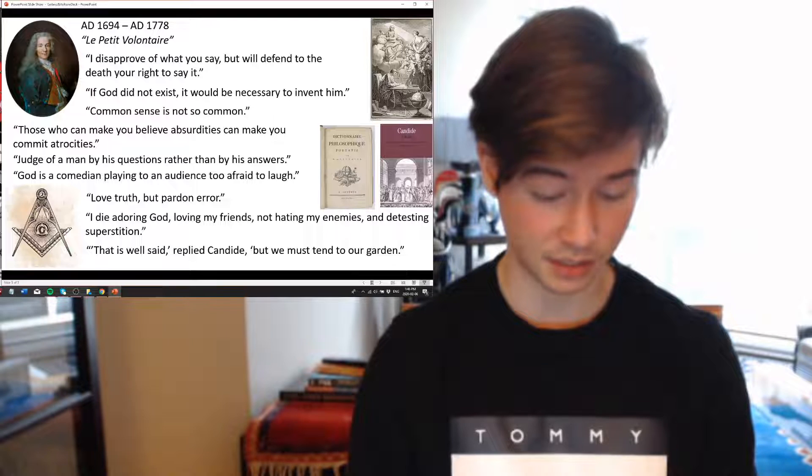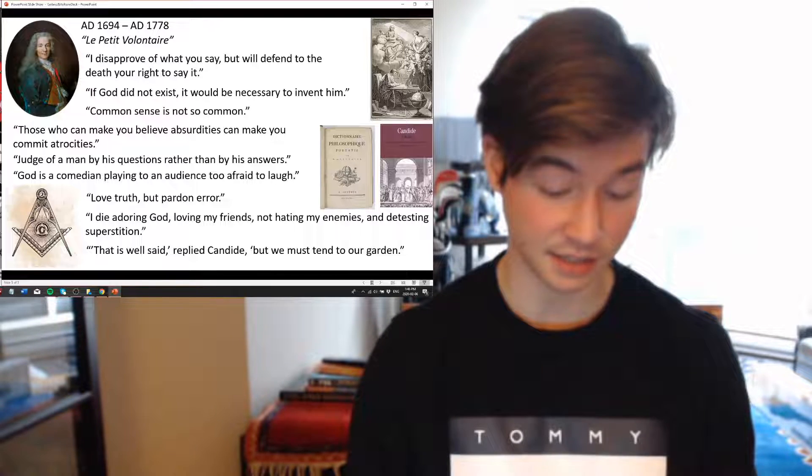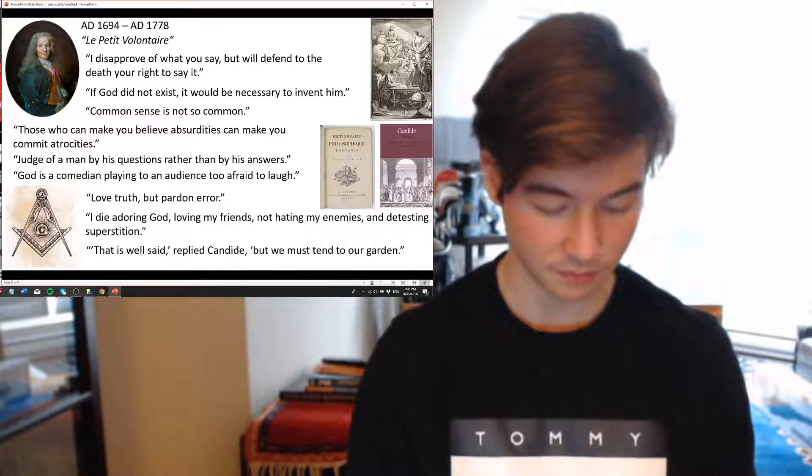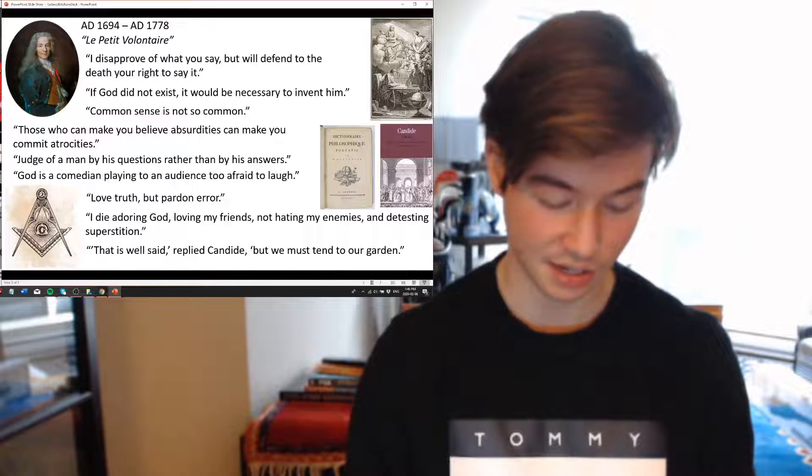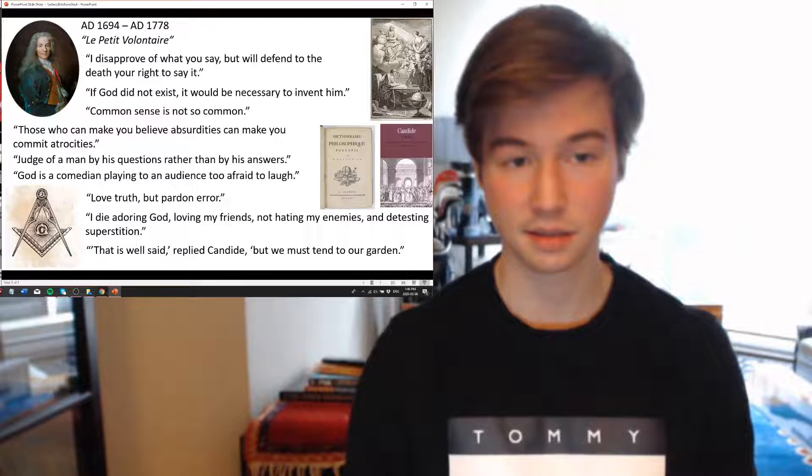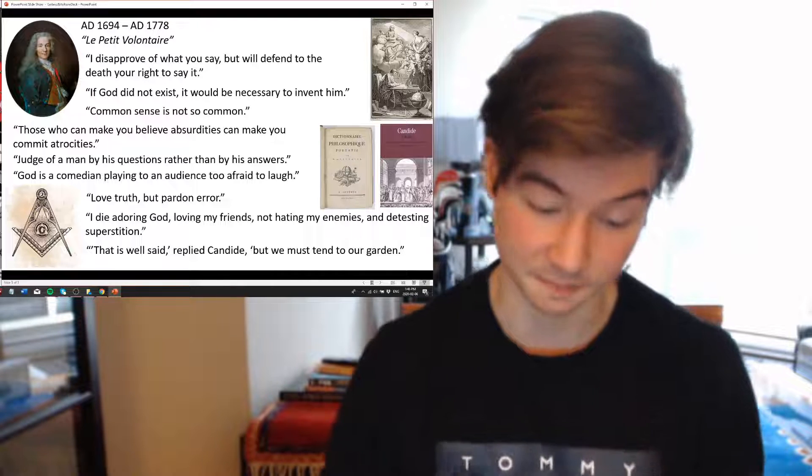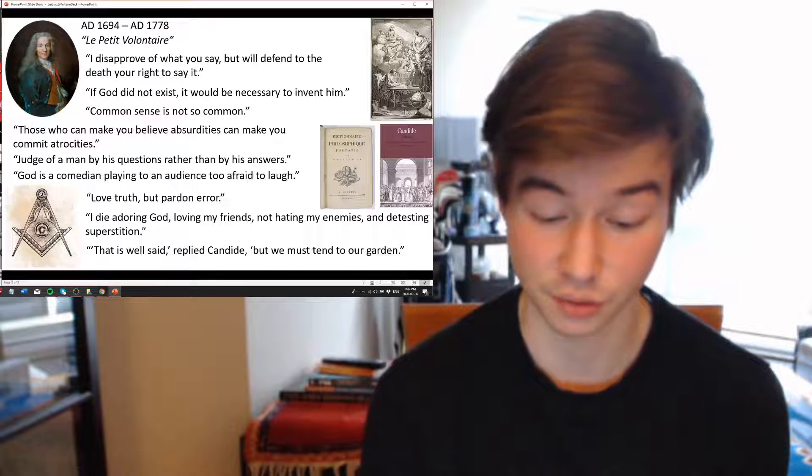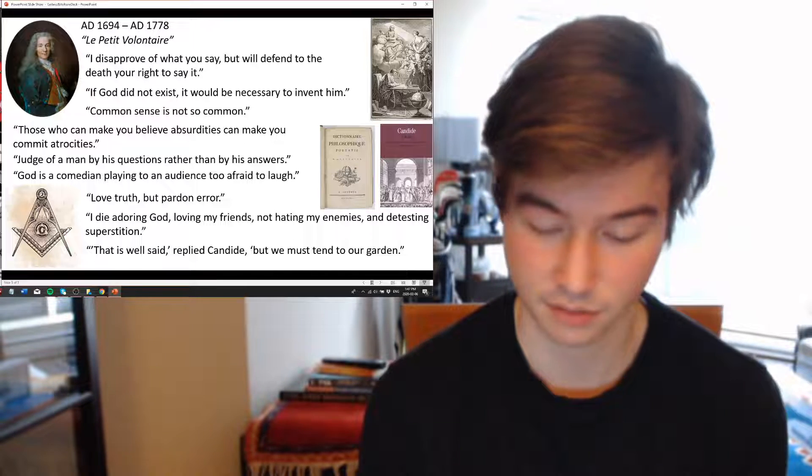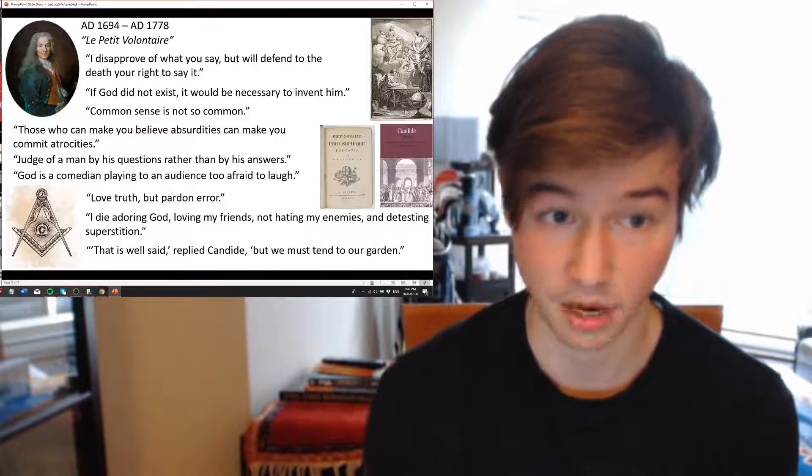In 1733, he produced a play called Zaïre, which he dedicated to Fawkener, his friend in the United Kingdom, and he praised English liberty and commerce in this writing. He also wrote letters concerning the English nation. Particularly in France, he wrote lettres philosophiques, which praised the English system over the French, which was publicly burned in France, and he was forced to flee Paris again. He spent some time in Château de Cirey, where he wrote elements of Newton, and he began to oppose Leibniz at this time, perhaps because he just liked Newton.